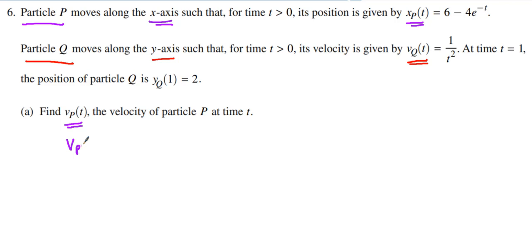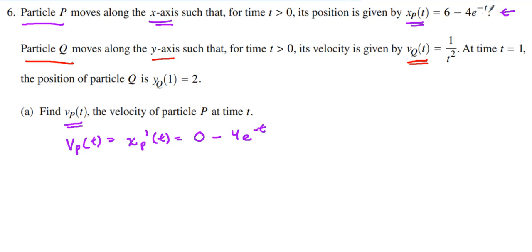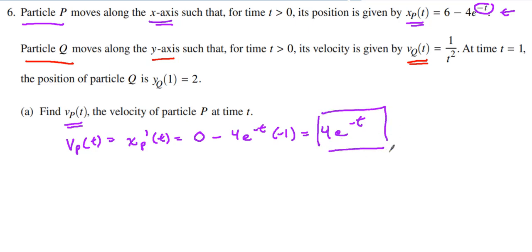So how do we find the velocity function of particle P? We take the position function of particle P and take its derivative. What's the derivative of six? It's zero. What's the derivative of four times e to the negative t? It's e to that exponent, so four times e to the negative t — but don't forget the chain rule. The derivative of negative t is negative one, so that negative one multiplies by the negative, and we end up getting four e to the negative t. That is the velocity function of particle P for any time greater than zero.